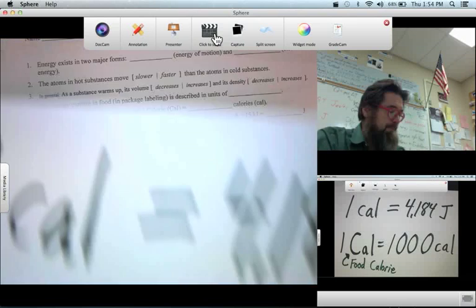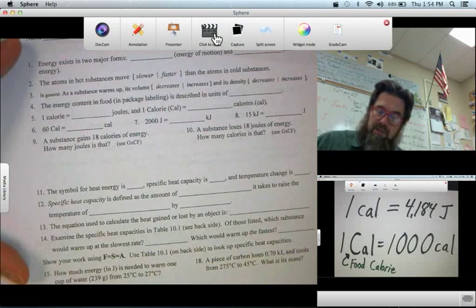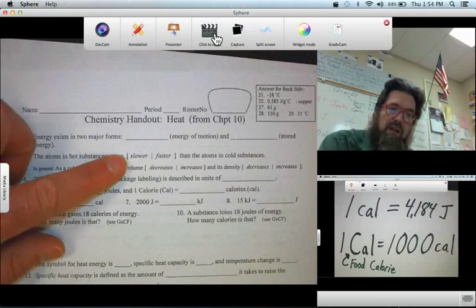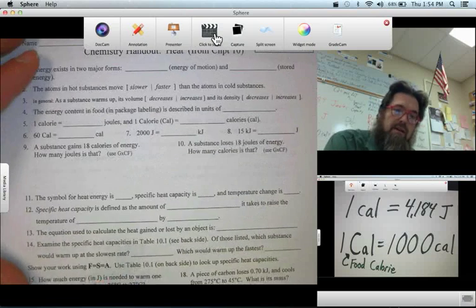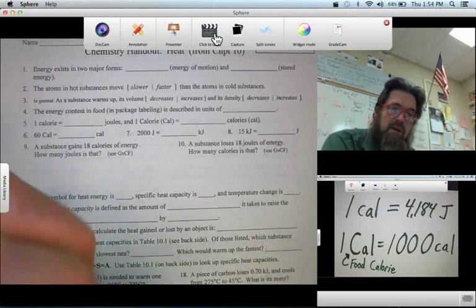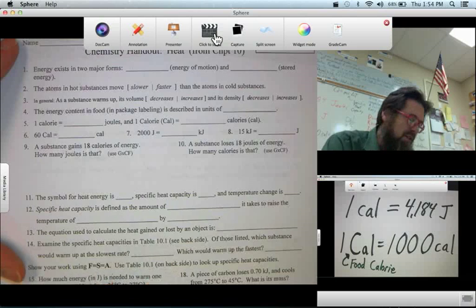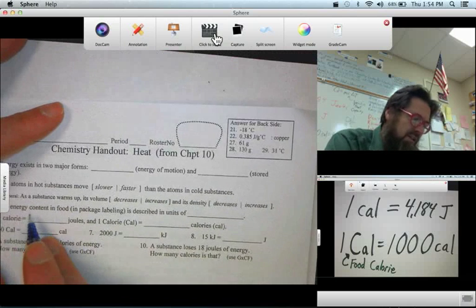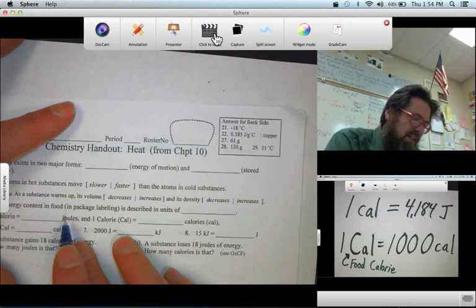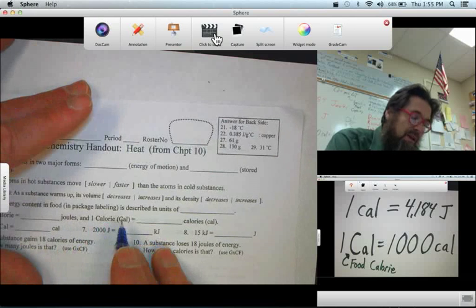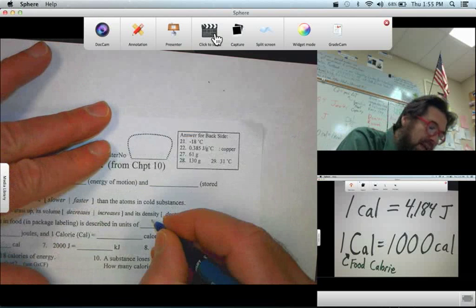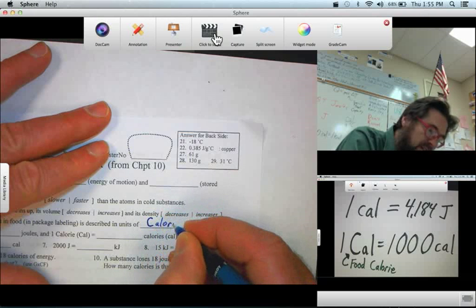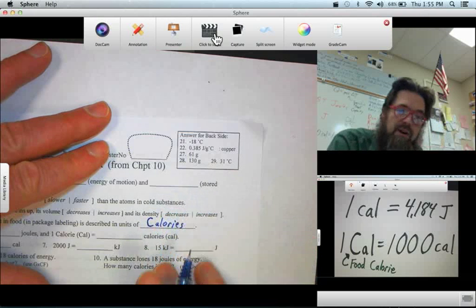All right, so let's use this information, do a couple of problems in the homework. Here's our homework, our heat worksheet. And question number 9 will be the first one we'll do. Actually, let's start a little earlier. We've already addressed question number 4. The energy content in food on package labeling, that's in units of big C calories, also known as dietary calories. So that's how we would write that, with a very clear uppercase C.